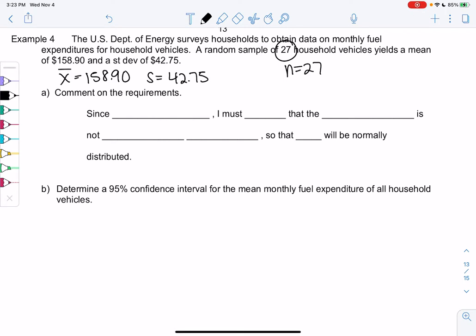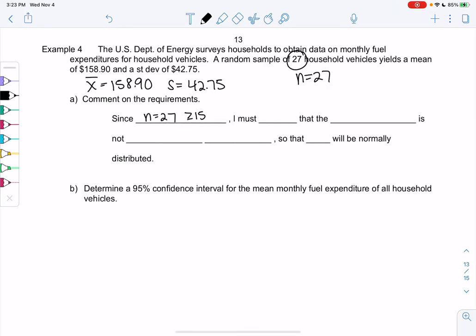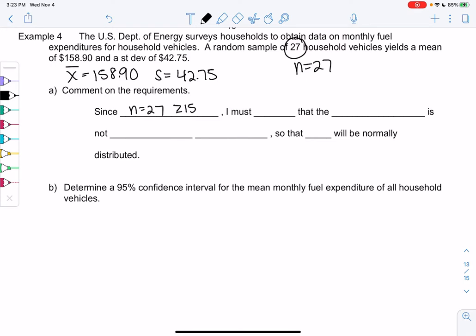Let's do the requirements. My sample size is 27, so I don't quite make that cutoff of 30, but I do make the cutoff of 15. So we just need the data to not be severely skewed. We don't need normal for the population, just at least not severely skewed. I must hope that the population is not severely skewed so that way x̄ will be normal.